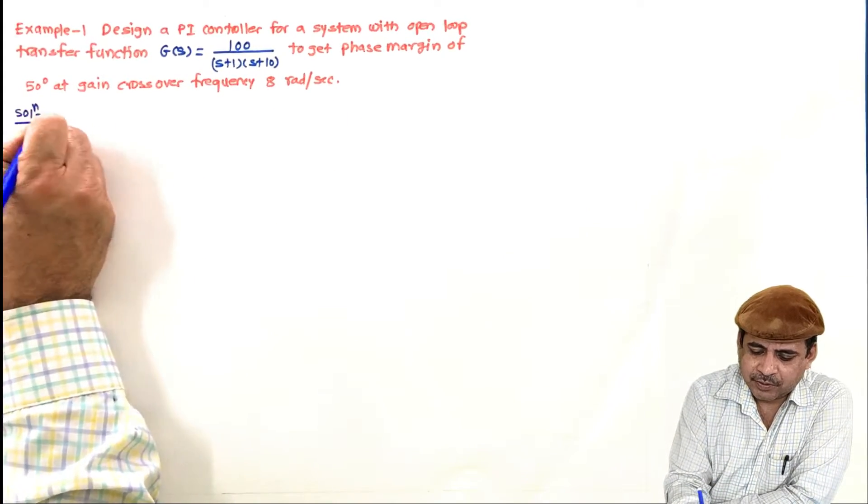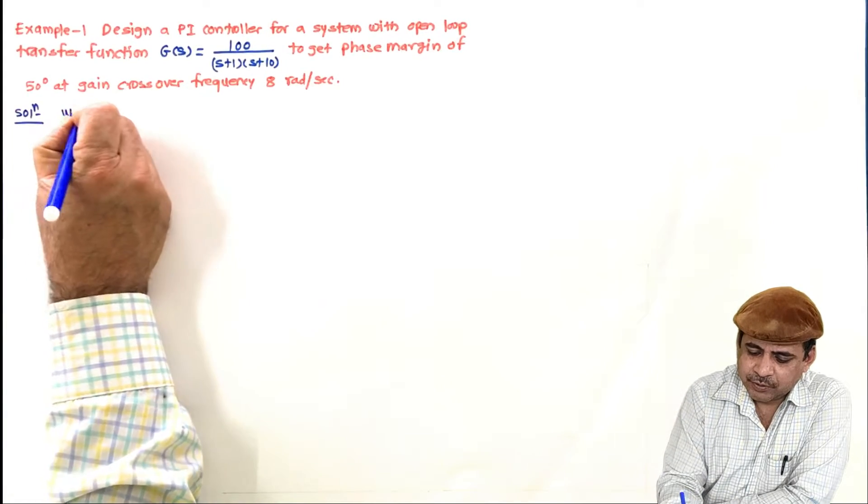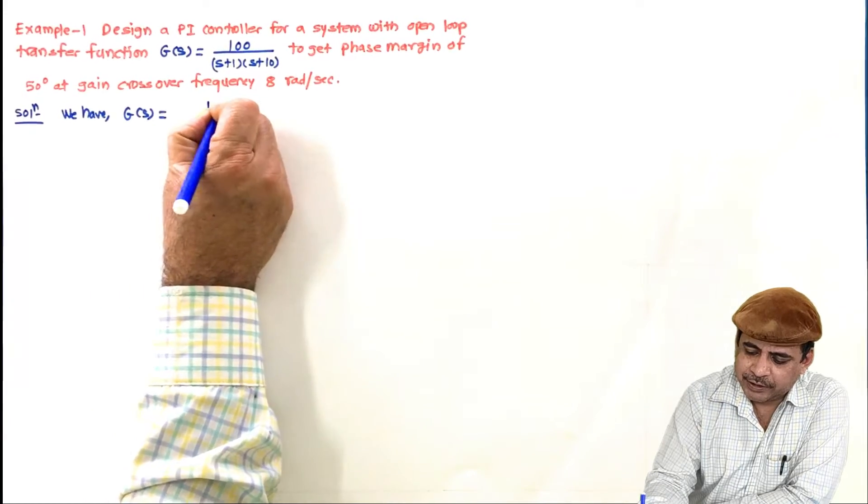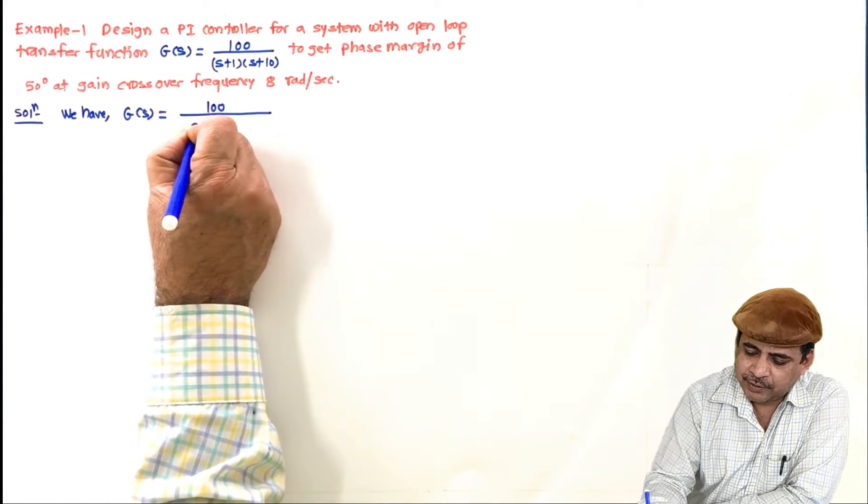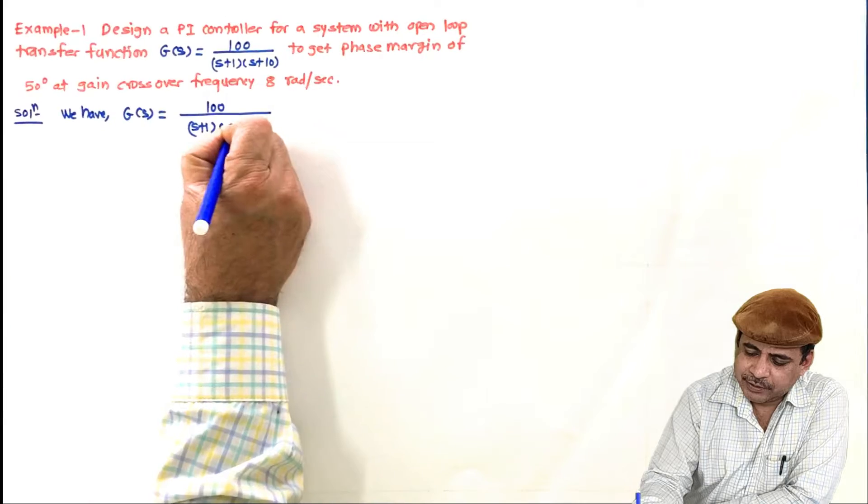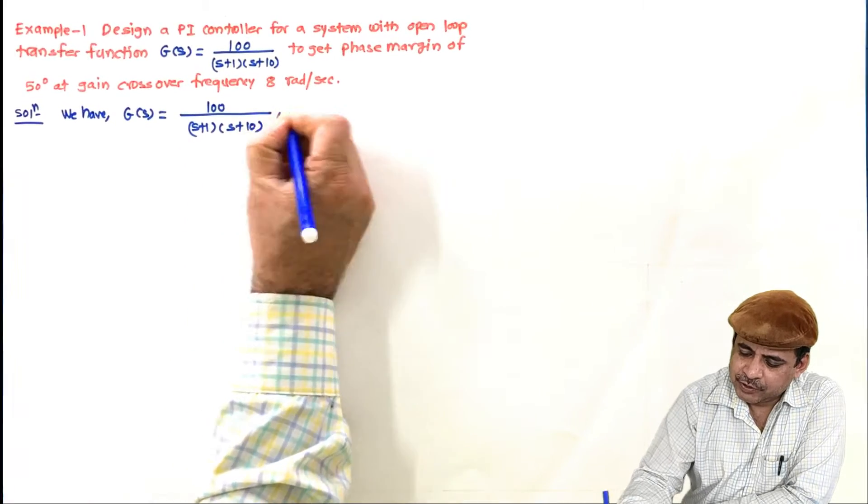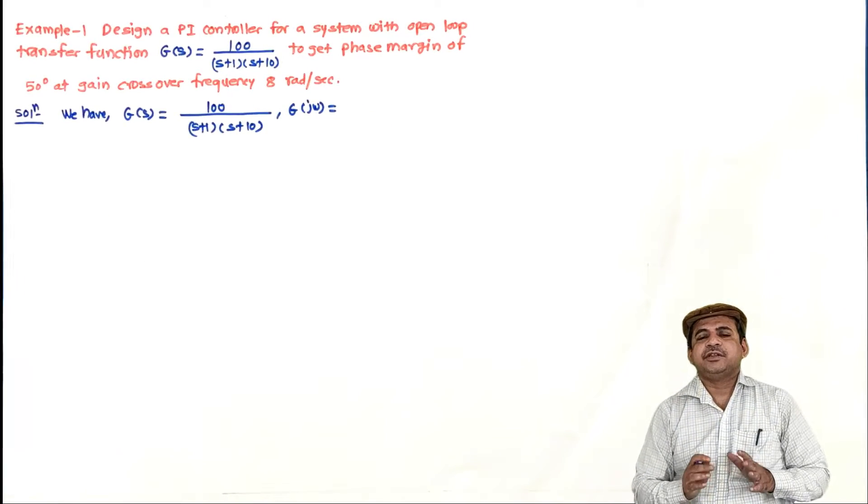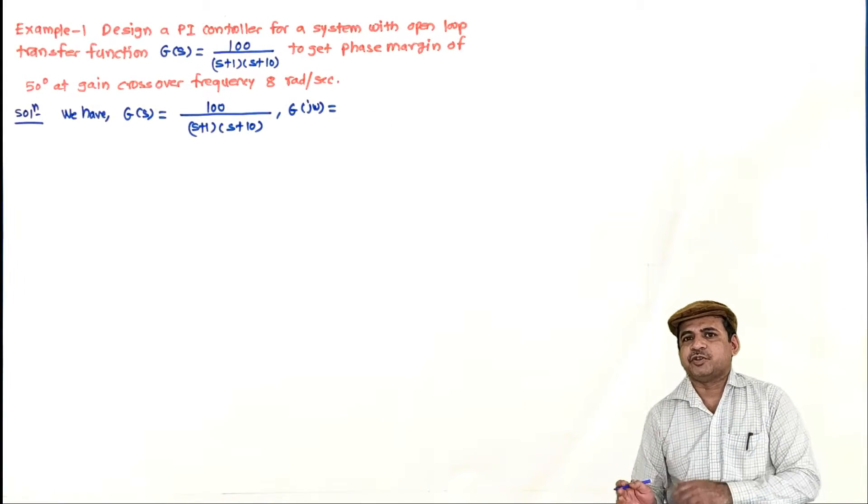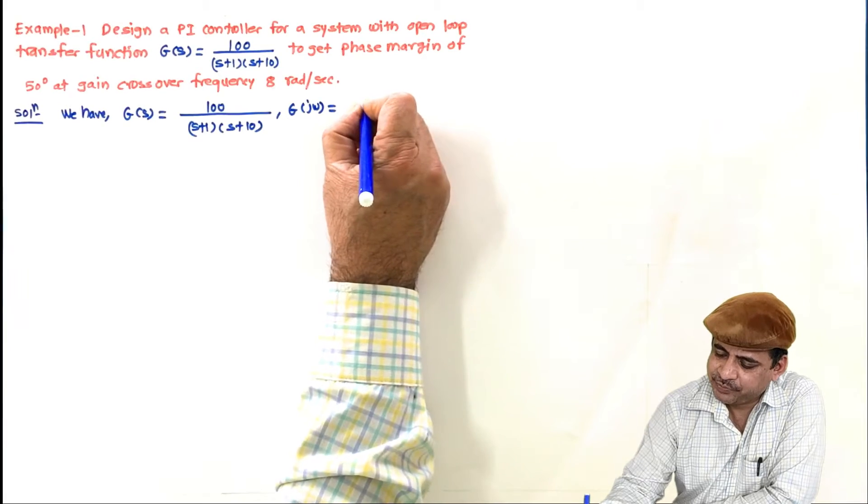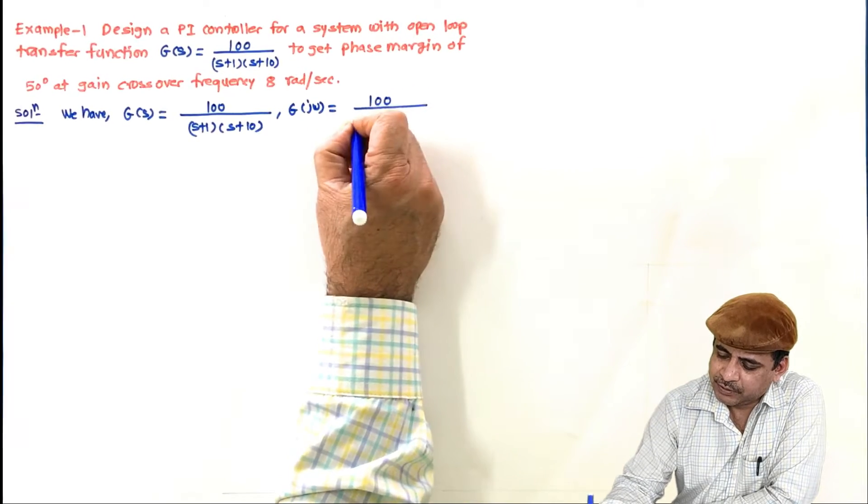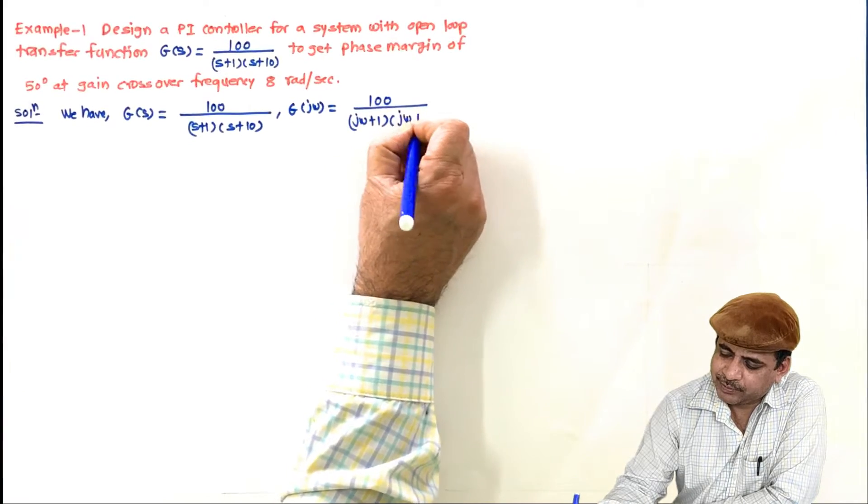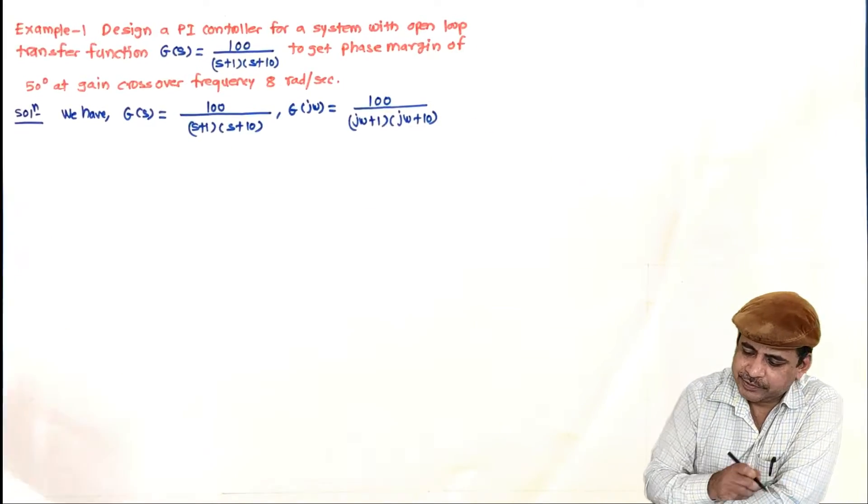We have G(s) equals 100 upon (s+1)(s+10). Always, whenever we are dealing with frequency domain methods, we need to transform this to frequency response function. So G(jω) is 100 upon (jω+1)(jω+10).